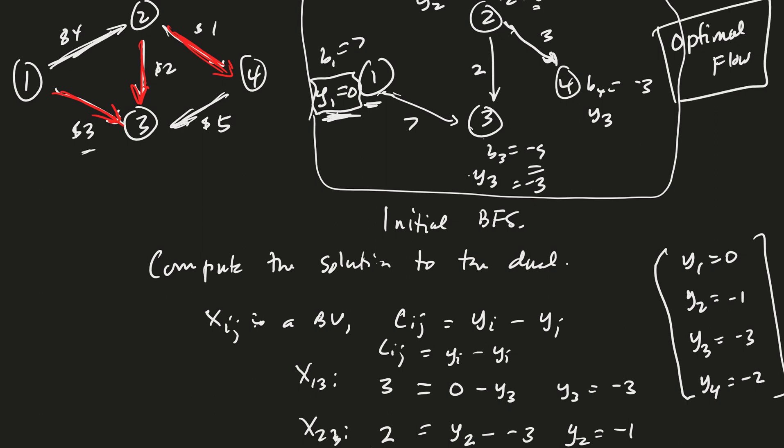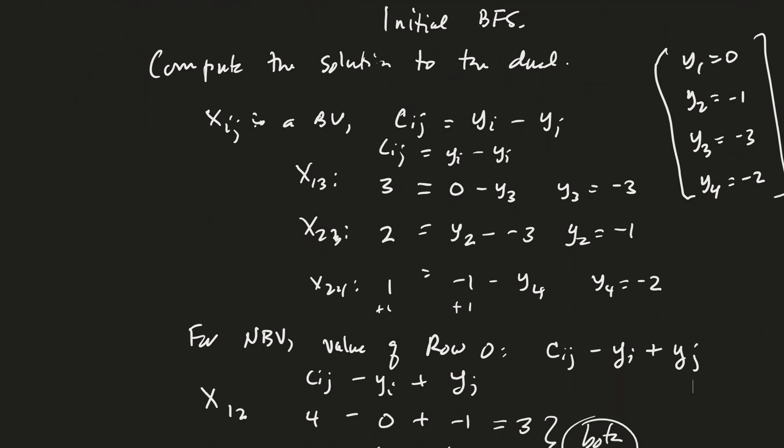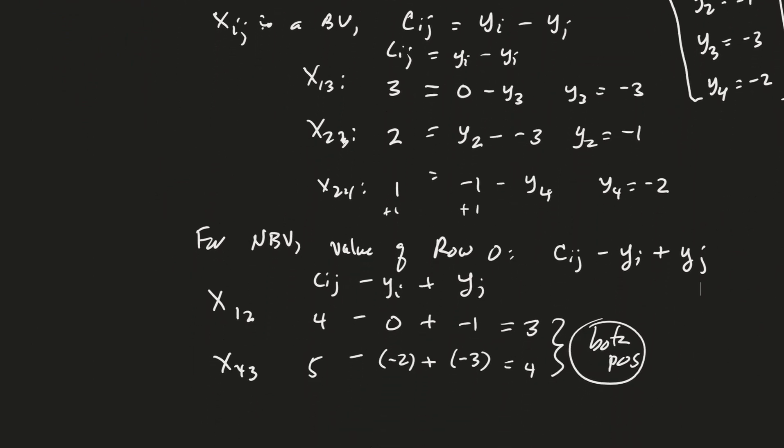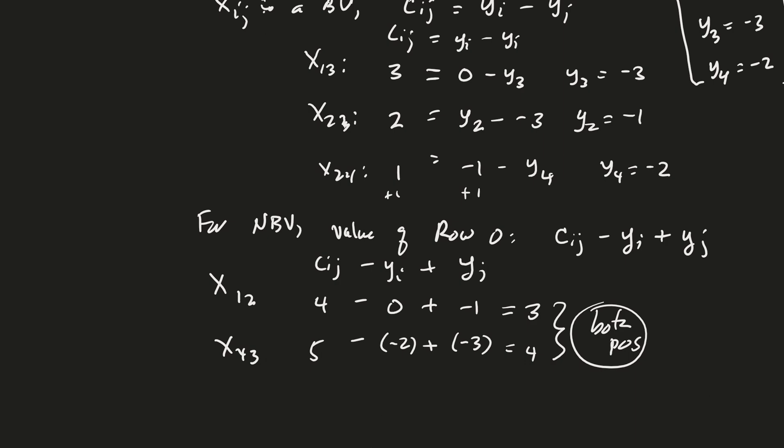And so as it turned out, the minimum cost, or I'm sorry, the minimum spanning tree formula, or the algorithm, gave us a BFS that actually worked out for our flow. Very good. So this is the standard way of computing the network simplex numbers.